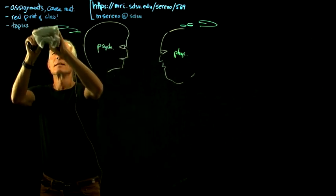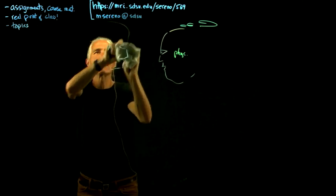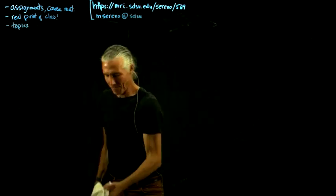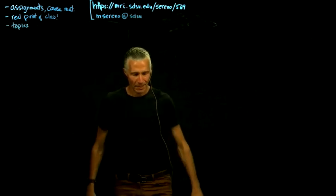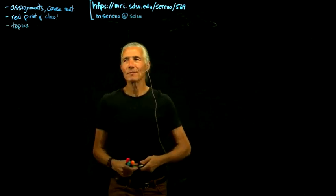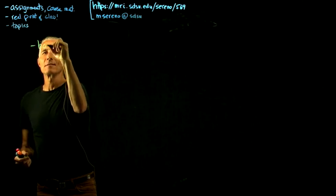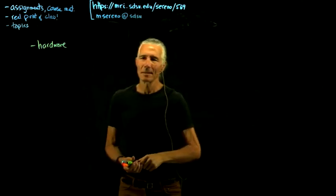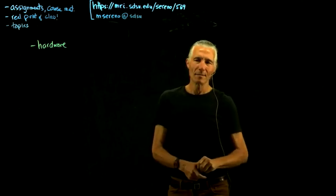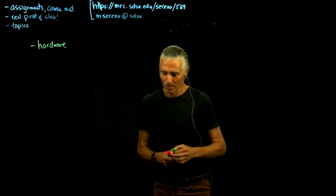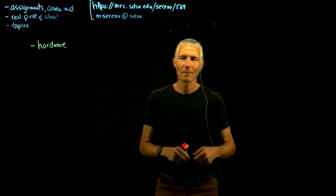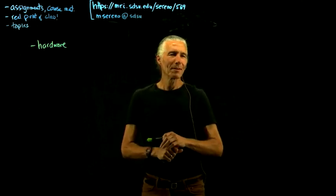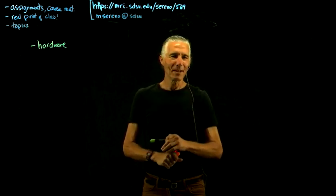Let's go over the main topics in the course. We start off with the hardware — on Wednesday we'll go over the main pieces of hardware in the MRI. We'll talk later about the hardware of EEG and MEG recording later in the course. There are enough people that maybe we'll take a field trip at some point to the MRI center so you can actually see the giant, always-on magnet.